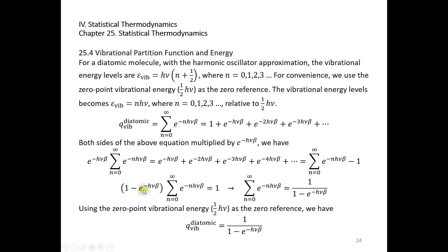Rearranging gives 1 minus e to the power of negative h nu beta times q equals 1. So the sum is simply 1 over 1 minus e to the power of negative h nu beta. In summary, using the zero-point vibrational energy as the zero reference, the vibrational partition function for a diatomic molecule is 1 over 1 minus e to the power of negative h nu beta, derived using the harmonic oscillator approximation.